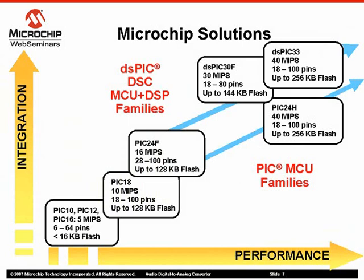The audio DAC is currently offered on six DSPIC 33F devices. These devices have 64 and 128 kilobytes of flash and can operate at 40 MIPS. Four of these devices can be found in a general purpose family, and the other two devices can be found in the motor control family.